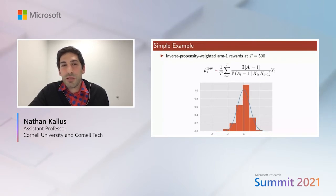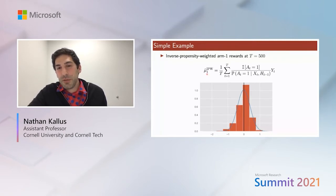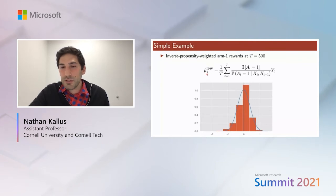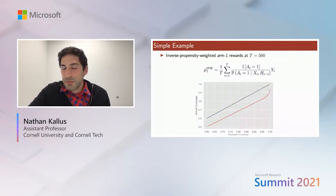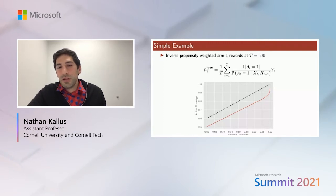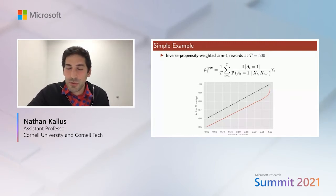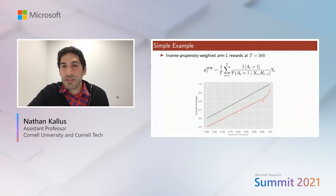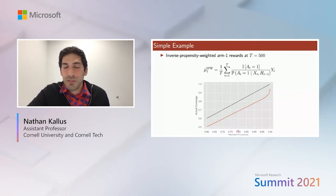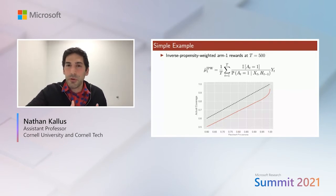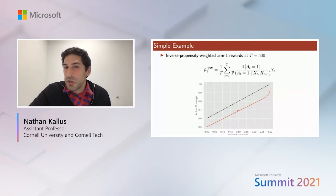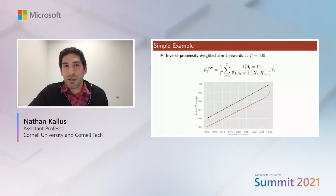If we try to construct confidence intervals by adding plus-or-minus two standard errors — designed for 95% coverage — we only get 80% coverage. If we aim for 80% coverage, we only get 70%. And it's not that it's always under-covered, which would allow us to simply expand it; the coverage is completely unpredictable. In another example we might be over-covering.